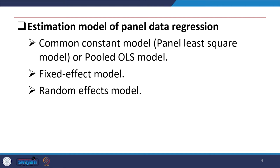To estimate the panel data regression, we considered three important models. One is called common constant model, also called pooled OLS regression model. Then another one is called fixed effect model and the third one is called random effect model.